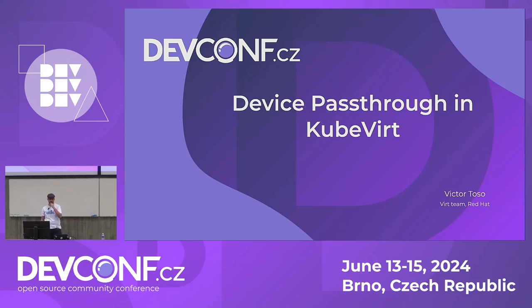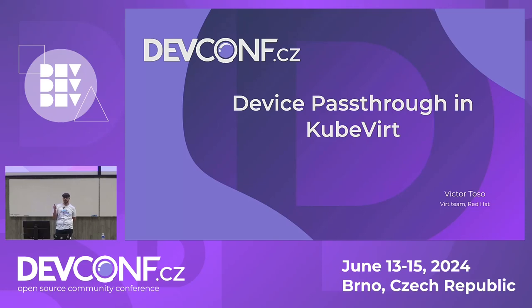Hello everyone. Thank you so much for coming to the talk. My name is Victor Tozo. I work in the VRT team in Red Hat. I come today to share a little bit of this journey I had last year when I wanted to share a USB device connected into a Kubernetes node into the VM running in the same node. The goal of this talk is to explain the key concepts behind how device pass-through is possible with Kubernetes.